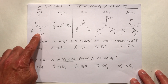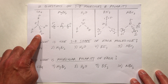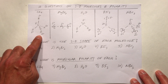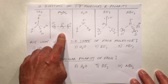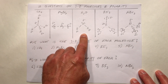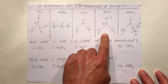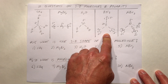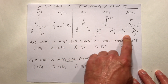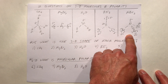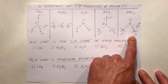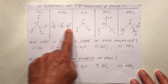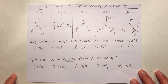Given these molecules — CH₄ with this structure, MgBr₂ with this structure, H₂O with this structure, BI₃ with this structure, and NBr₃ with this structure — and given that they all have polar bonds.